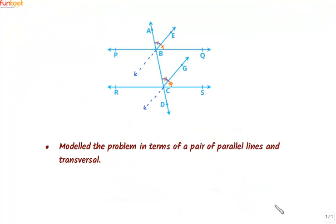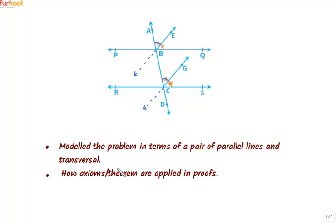Let's summarize what we have learned by solving this problem. We modeled the problem in terms of a pair of parallel lines and a transversal. We also learned how axioms and theorems are applied in proofs.